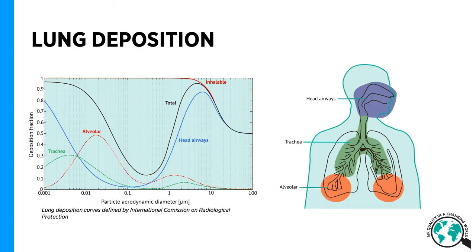If we focus on the particles, there are several things to consider. The particles come from different sources and are as a result in different sizes. These different sizes of particles also deposit with different probability into our respiratory system. The most significant pollution is considered to be the fine particles and especially the ultrafine particles — particles smaller than 100 nanometers in diameter — which can penetrate deeply into our respiratory system and deposit very efficiently into our lungs and the alveolar region.